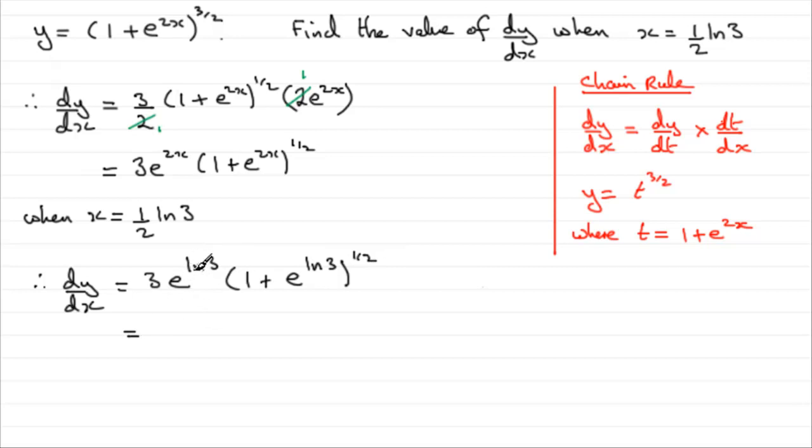You should know a common result here: if you have e^(ln x), the standard result is simply x, one being the inverse of the other. Try it on the calculator if you're unsure. e^(ln3) should give you 3.